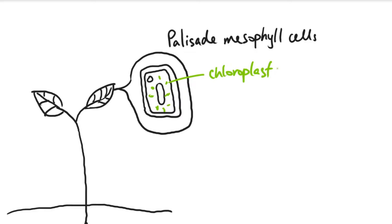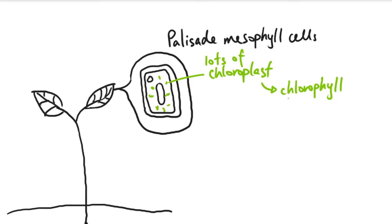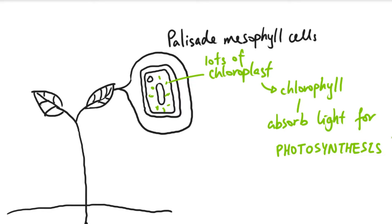A lot of plant cells do have chloroplasts but there are particularly lots of them within palisade mesophyll cells, and that is their adaptation. Inside these chloroplasts they contain a green pigment called chlorophyll. These chlorophyll pigments are able to absorb light and then convert that energy from the light to carry out the reaction — they absorb the light for photosynthesis. That's the initial bit about using light as a way to start this reaction.